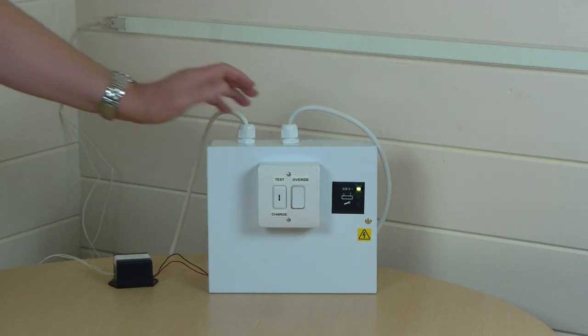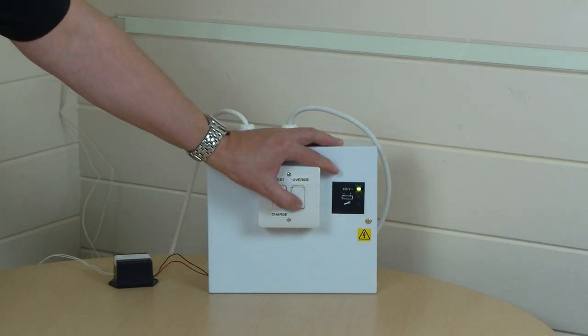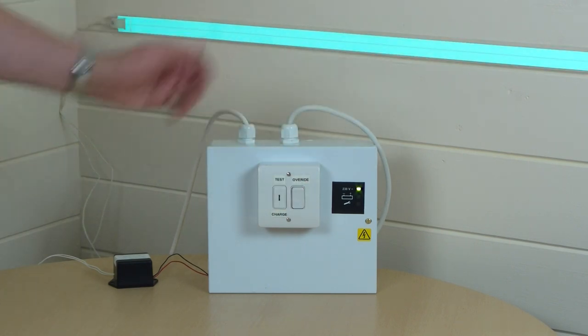The system has an override switch so the Light tape can be driven directly from the 12 volt transformer connected to the mains. That's in case you need to provide ancillary lighting.